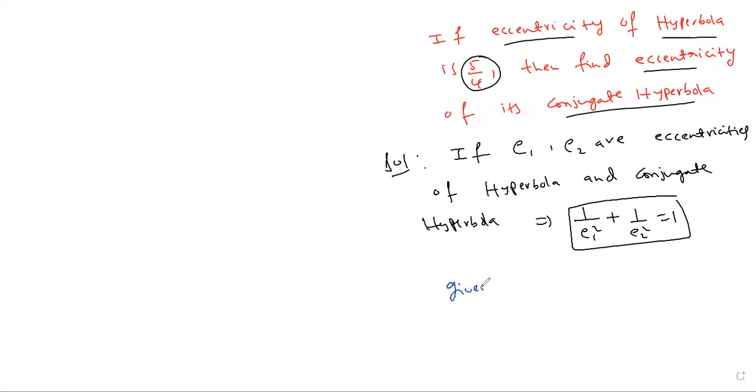Given e1 as 5 by 4. What is e1 according to our assumption? E1 is eccentricity of hyperbola.